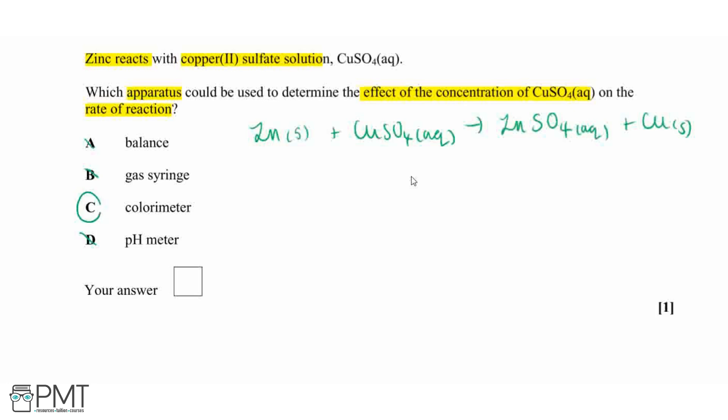So this leaves a colorimeter as our answer, which is also appropriate for this reaction because our copper sulfate is a blue solution because our copper is a transition metal. And we know that a property of our transition metals is that they produce colored solutions for their compounds.